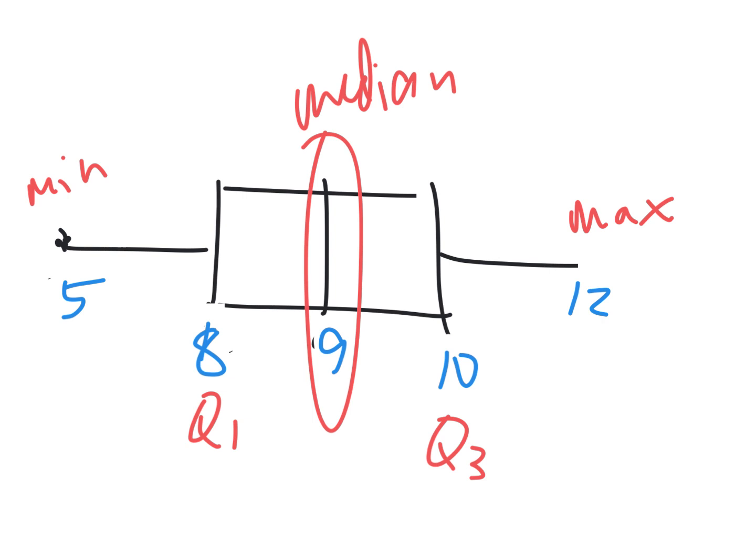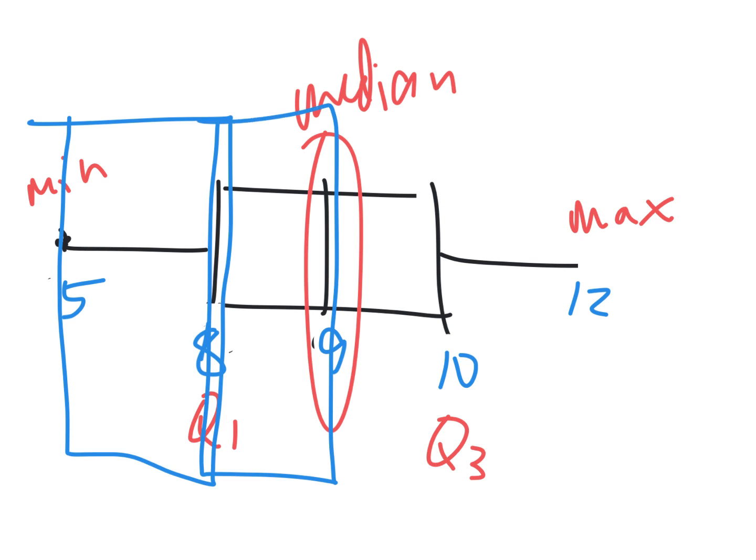Now, that divides it into four nice little chunks. And so I can say that 25% of my data is in there. 25% of my data is in there. 25% of my data is in here. And 25% of my data is in there. Do you get it's divided into four chunks?